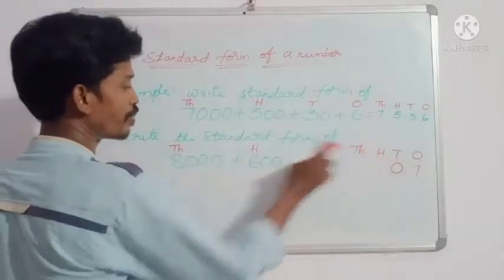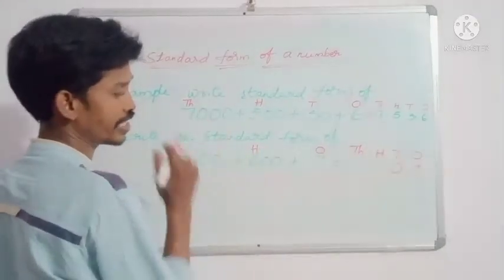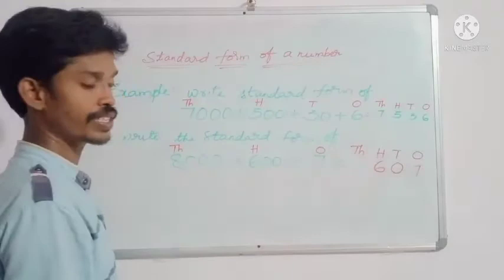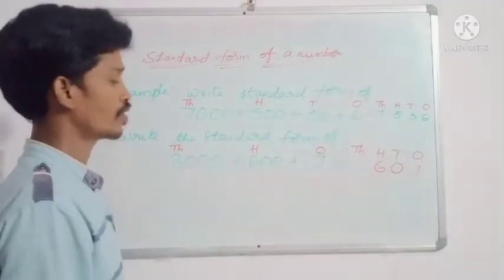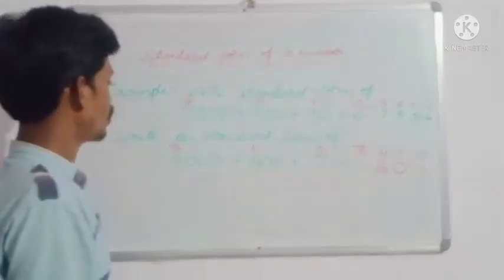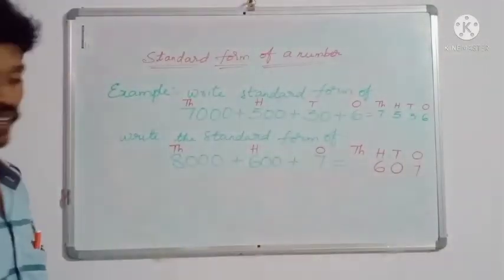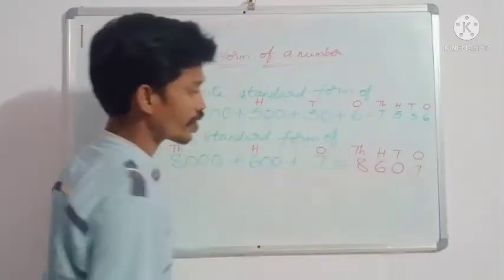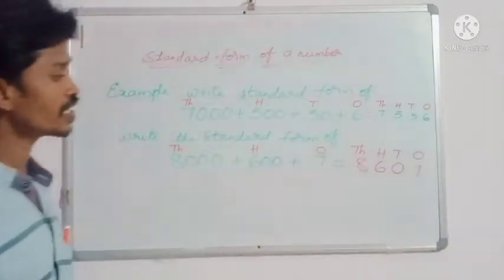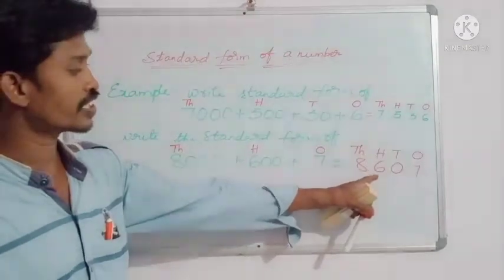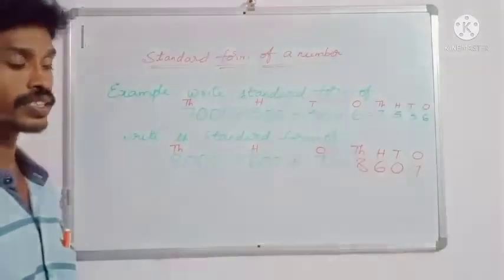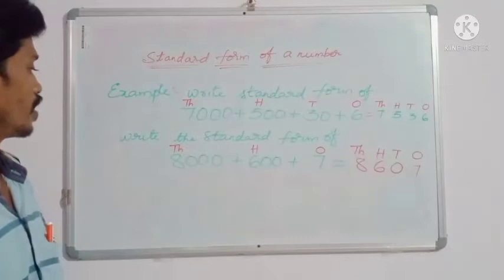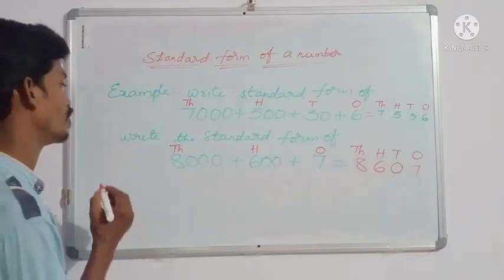What is the digit under hundreds place? Six. You have to write 6 here. Next, thousands place — what is the digit in thousands place? Eight. What is the answer? 8607. The answer is 8607. We will take another example.